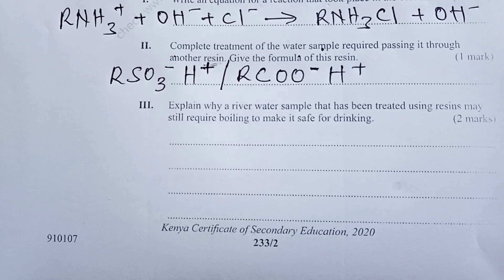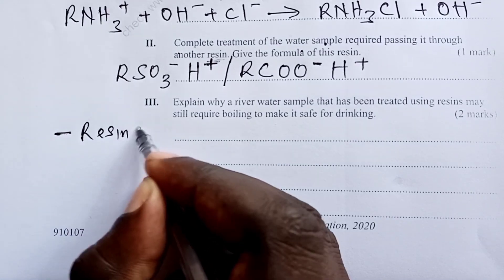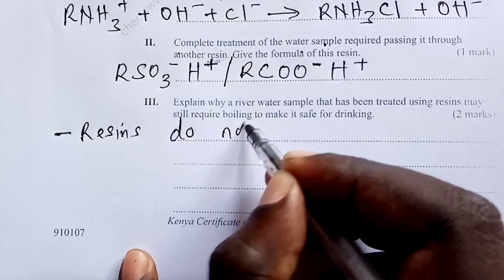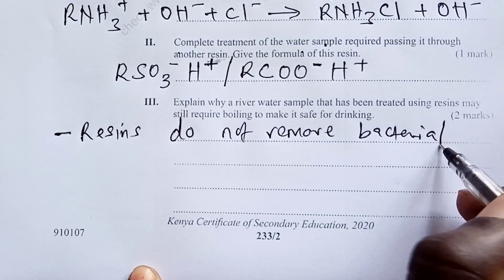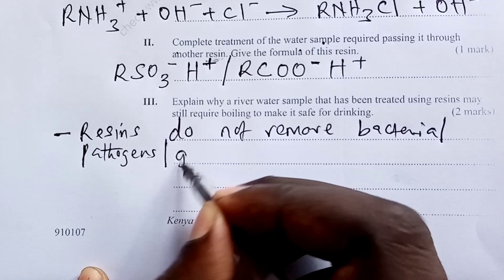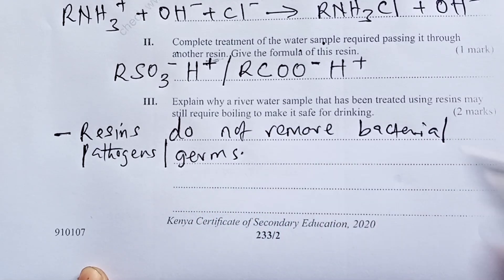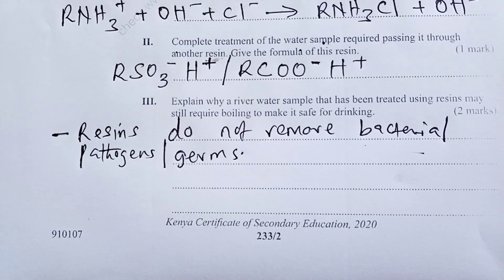Part 3: explain why river water that has been treated using resins may still require boiling to make it safe for drinking. The answer is that resins do not remove bacteria or pathogens. Boiling kills bacteria and pathogens, so even after treating water with resins it is always good to continue boiling before drinking.